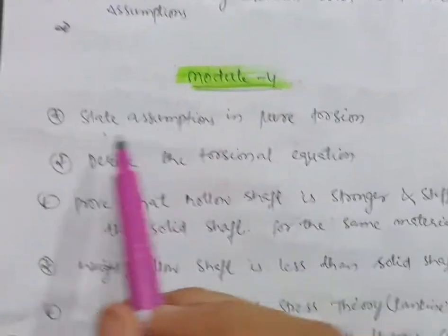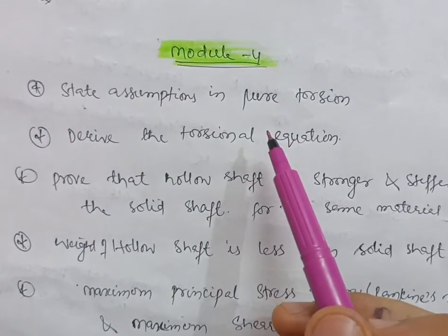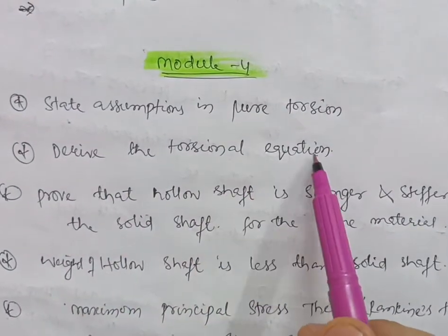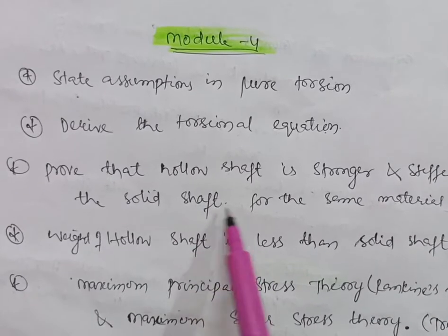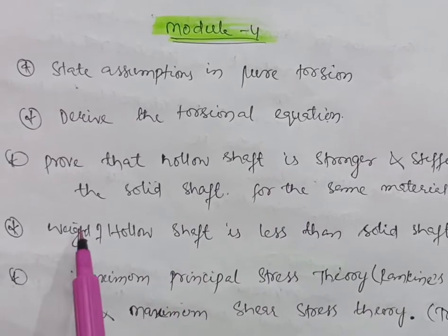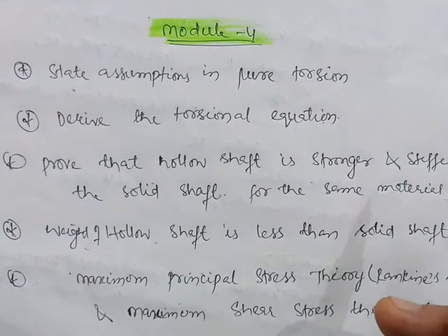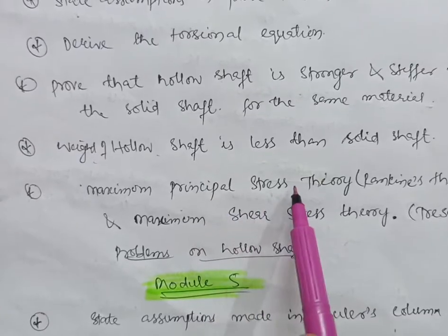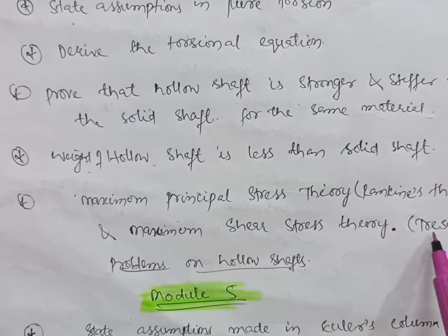In Module 4, there are four or five derivations. Go through the assumptions in pure torsion and derive the torsional equation. Then prove that a hollow shaft is stronger and stiffer than a solid shaft for the same material, and also prove that the weight of a hollow shaft is less than that of a solid shaft. In the last part, there will be maximum principal stress theory — Rankine's theory — and maximum shear stress theory, also called Tresca's theory.